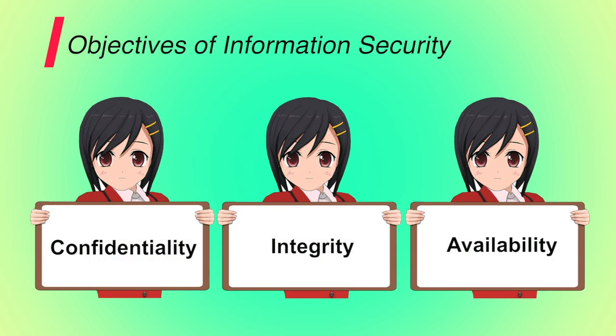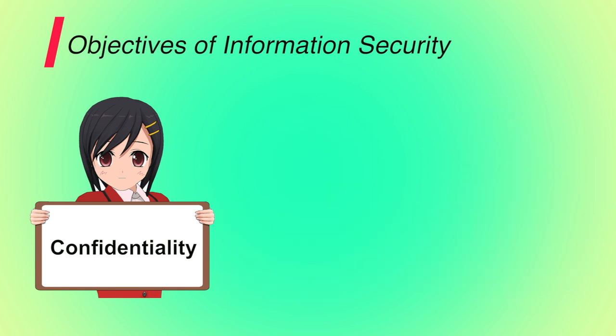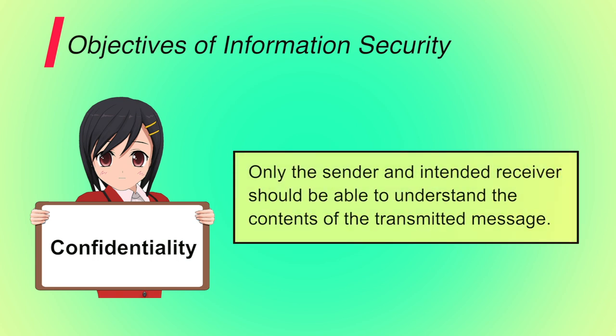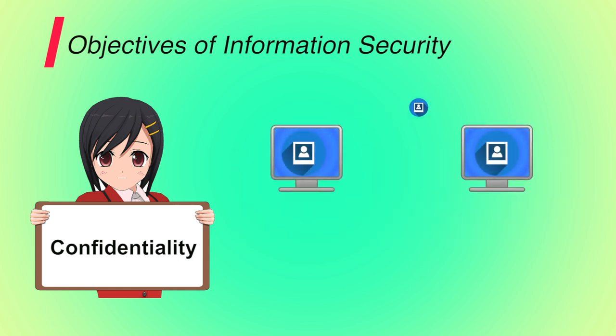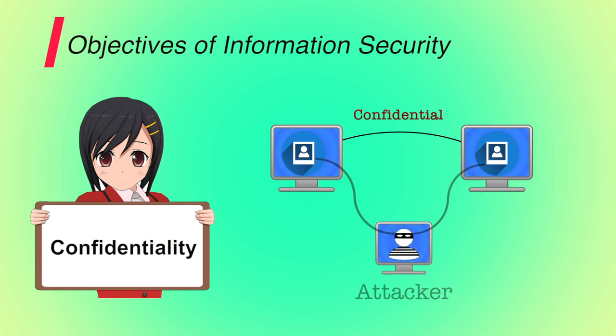Confidentiality, integrity and availability are the three main objectives of information security. First is confidentiality — it means to control or restrict access of critical or sensitive information to an individual. Loss of confidentiality is the unauthorized disclosure of information. For example, if you are sending your picture to your friend, it should be confidential between you and your friend. If any other person is eavesdropping during your communication, it breaks the confidentiality of the message.